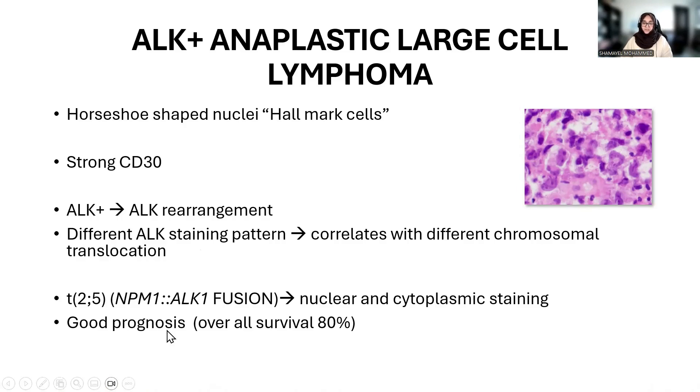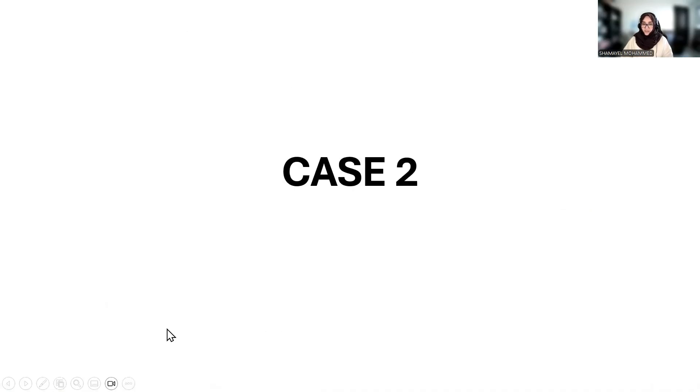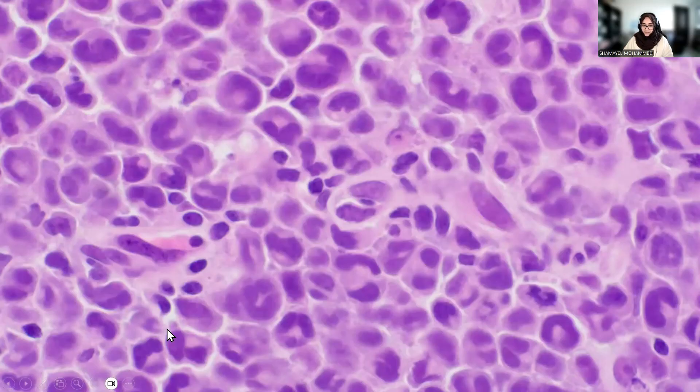Anaplastic large cell lymphoma is characterized by the variable presence of horseshoe-shaped nuclei — the hallmark cells — and strong CD30 positivity. ALK positivity means ALK rearrangement, and different ALK staining patterns correlate with different chromosomal translocations. The most common translocation involves chromosomes 2 and 5, the NPM and ALK genes. When NPM is involved, you have nuclear and cytoplasmic staining, just like our case. ALK positivity carries a good prognosis with an overall survival of 80%.